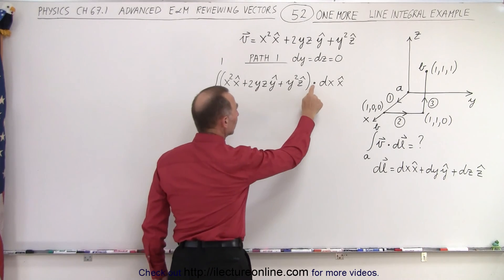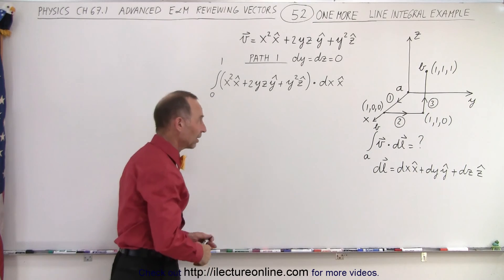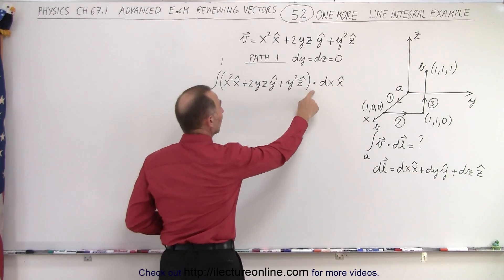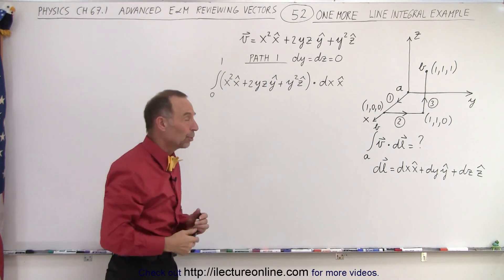So we take our vector and we're going to take the dot product with a small displacement in the x-direction, dx in the x-direction. Which means that when we multiply via the dot product, the y and the z components drop out because we only have one x component right there.